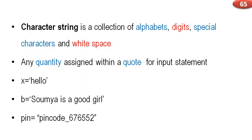Next, strings. A character string or simply string is a collection of alphabets, digits, special characters, and white space. Any quantity assigned within quotes in an input statement is called a string. For example, 'Hello' is a string. It can even be a single letter. If you give a number inside quotes, that will also be a string. A combination of all these things is also allowed — for example, 'Soumya is a good girl' inside quotes is a string.